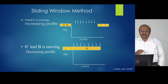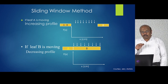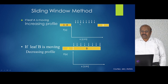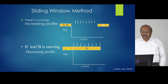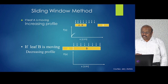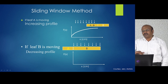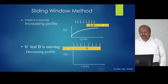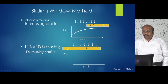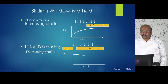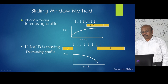Now let us go to the sliding window. In the sliding window the leaf must be continuously moving when the beam is on. If you want an increasing profile, you move leaf A — as it moves with radiation on, there will be more dose on one side because that portion was open longer, and less on the other side, giving an increasing profile. For a decreasing profile, you close B and move it from the other direction, giving a decreasing profile.